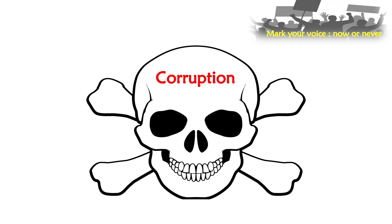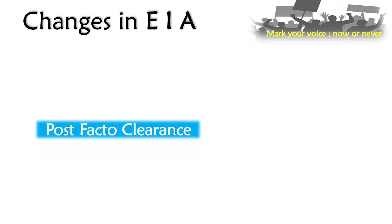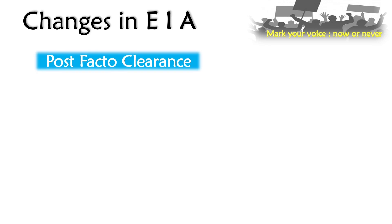Now let's look at EIA Draft 2020. When hearing about changes, we'd expect rules to be stricter than before, but the EIA Draft 2020 announced in March is miserably disappointing. After reading many rules, we can see they are made very lenient — more easy for those who set up a new factory. The first major criticism is post-facto clearance, meaning clearance of a project can be taken after starting it. A company can set up a project, start work, and afterwards take clearance. Just think — what is the role of clearance after a blast?